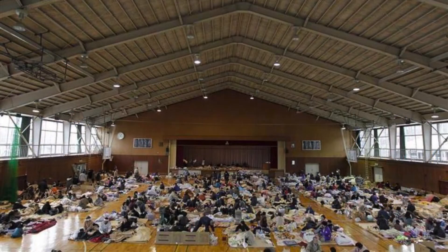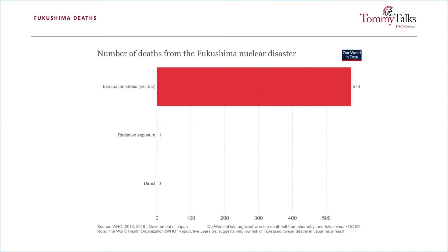Actually, I said that wrong. What I meant to say was that because 100,000 residents quickly fled the area, 573 people died. To date, only a single death has been attributed to radiation exposure from the Fukushima nuclear breach, and that was of a worker in charge of measuring the radiation levels at the reactor shortly after its meltdown.